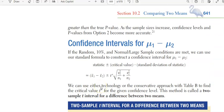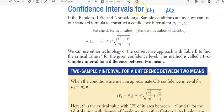Alright, so today we're going to continue with section 10.2 and finish it up. This is going to be page 641 of the textbook. In this lesson, we're going to talk about confidence intervals for the difference of two means.